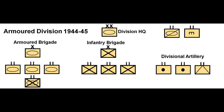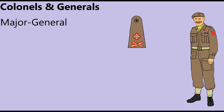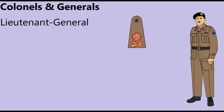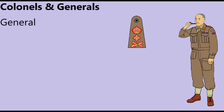Divisions, groupings of two or more brigades, were commanded by Major Generals who wore a crossed saber and baton and single rank star. A Lieutenant General wore the crossed saber and baton with a rank crown above. A Corps headquarters was commanded by a Lieutenant General, with two or more divisions under command. First Canadian Army was commanded by a Lieutenant General until 1944, when Harry Crerar was promoted to General. A soldier holding the rank of General wore a crossed saber and baton insignia, with both a rank star and rank crown on his epaulette.